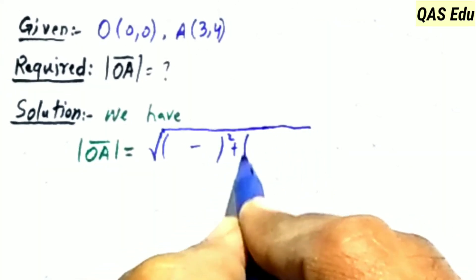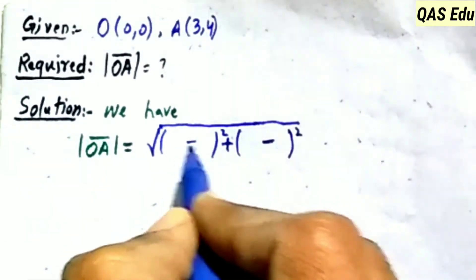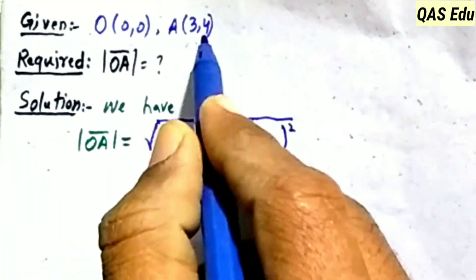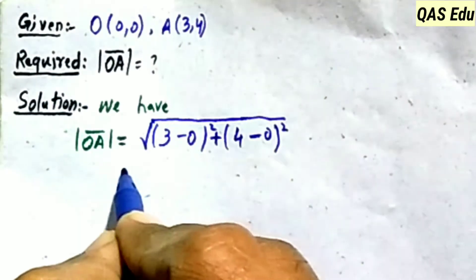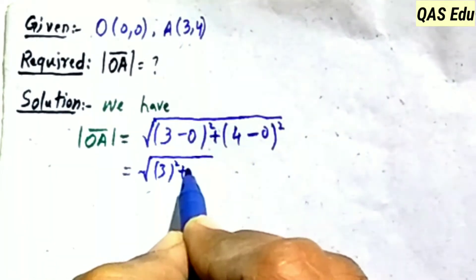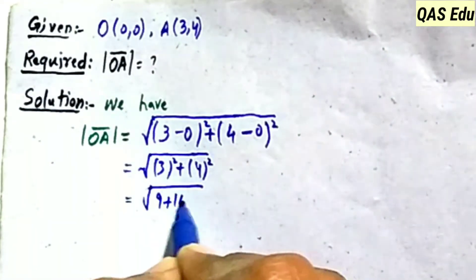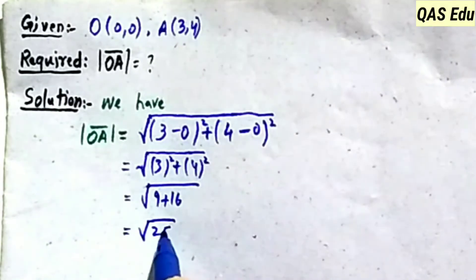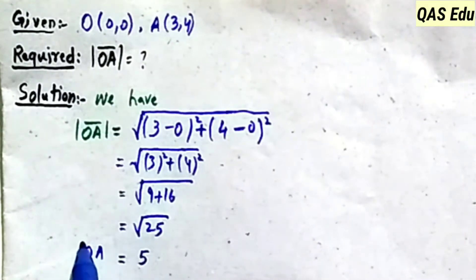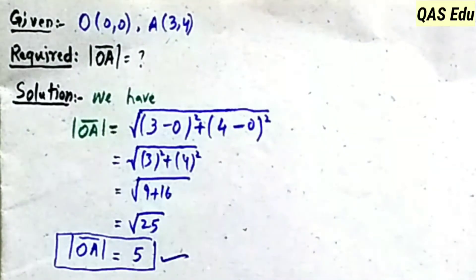For OA: x coordinates are 3 minus 0 = 3, y coordinates are 4 minus 0 = 4. So OA = √(3² + 4²) = √(9 + 16) = √25 = 5. The OA line segment length is 5 units.